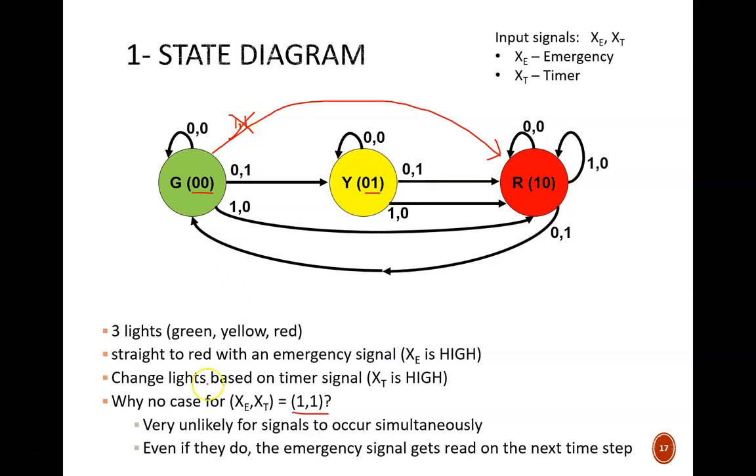First, it is very unlikely that those two inputs would occur simultaneously. Secondly, even if they did, and my design had a strange blip, like jumping from yellow to green, that blip would only last for one more clock cycle, so maybe one thousandth of a second.